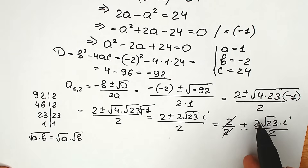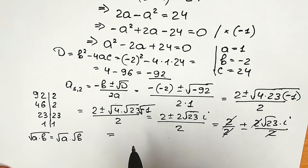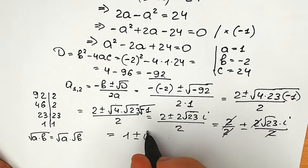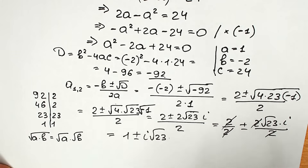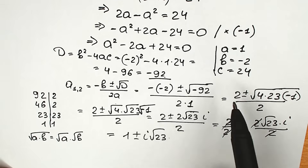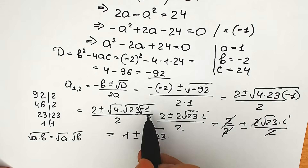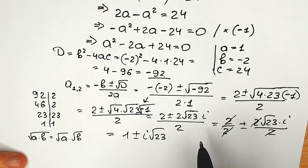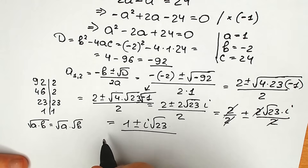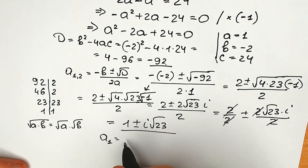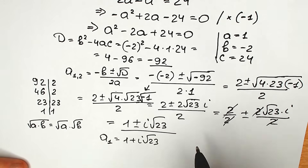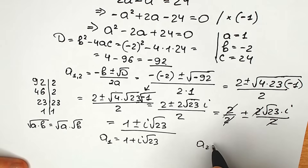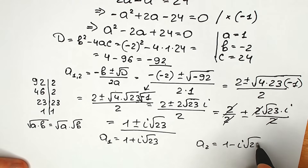We can divide the numerator by 2, canceling the 2s, and our final answer for a is 1 plus or minus i√23. So we have two roots: a₁ equals 1 plus i√23, and a₂ equals 1 minus i√23. These are complex values with imaginary unit i.